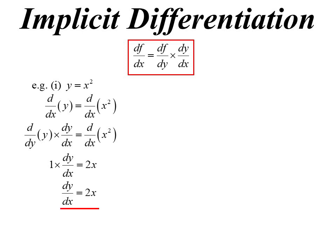Now of course we don't write all those middle lines down. Normally we go y = x² and straight to dy/dx = 2x. But that's really what we're doing. If we appreciate that idea, it now allows us to do something like this — instead of y = x² we have x = y².